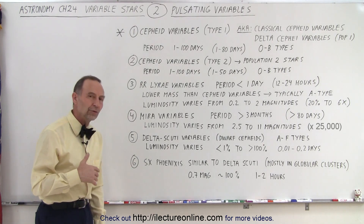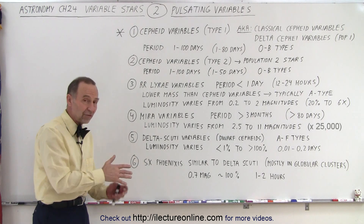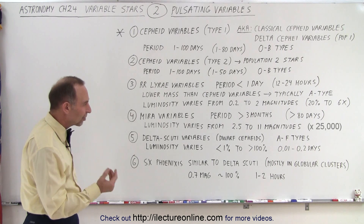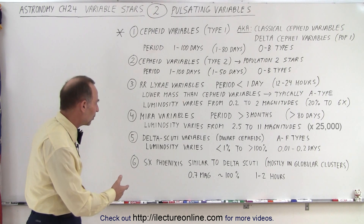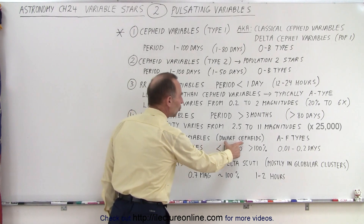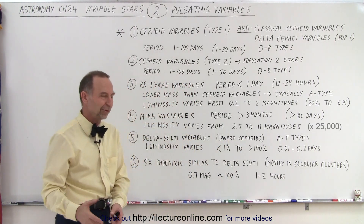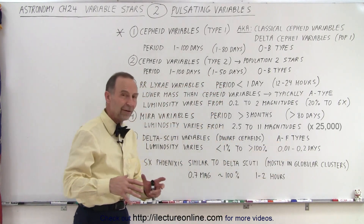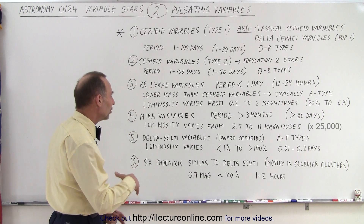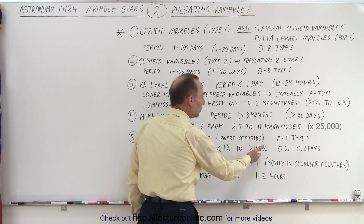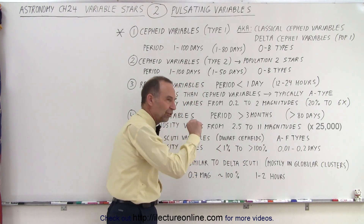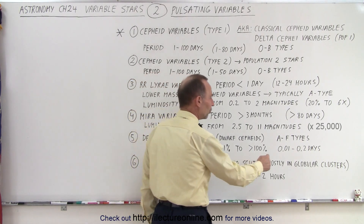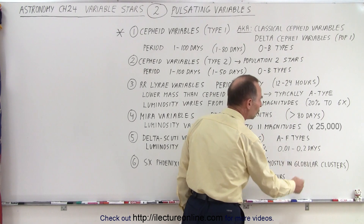Then we have some lesser-known types of variables — there are probably another dozen different kinds. Here are two for comparison: the Delta Scuti variables, which are the dwarf Cepheids. They're also A to F type stars — bigger than average but not by as much. Their luminosity varies anywhere from about 1% to 100%, meaning just a little to doubling in luminosity. Their periods are rather small, from 1/100 of a day to 2/10 of a day — about 4 or 5 hours.